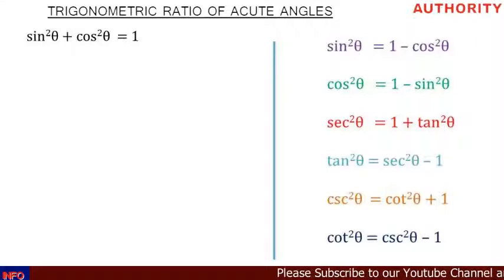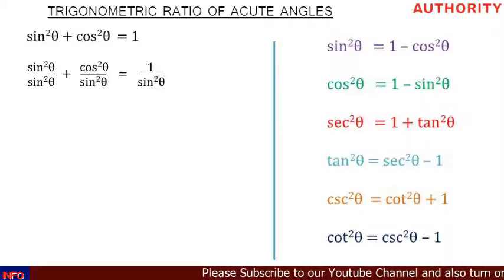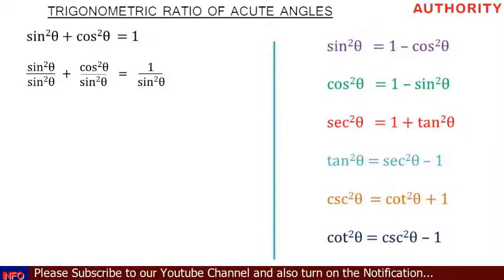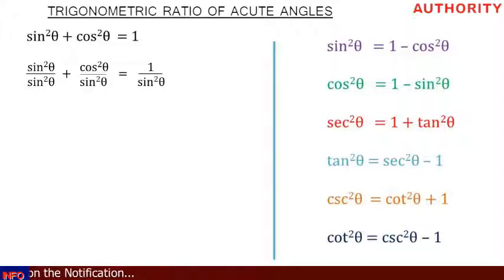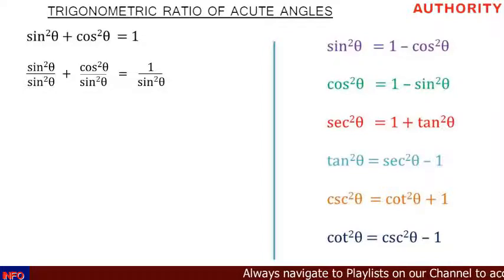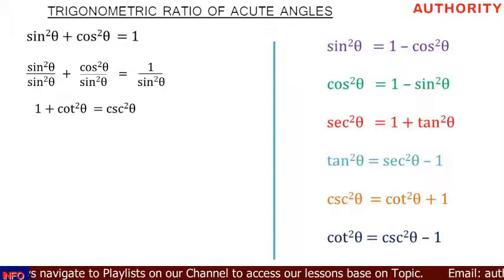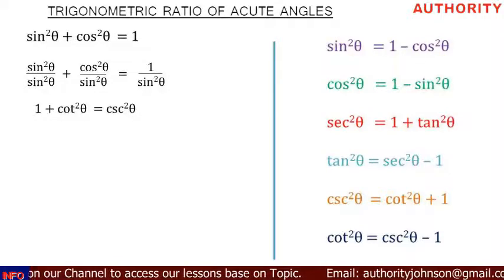Starting with sin²θ + cos²θ = 1, divide everything by sin²θ. That gives: sin²θ/sin²θ + cos²θ/sin²θ = 1/sin²θ. When you divide an expression by the same value it remains equal. So we have sin²θ/sin²θ + cos²θ/sin²θ = 1/sin²θ. Now, sin²θ divided by sin²θ gives you 1.